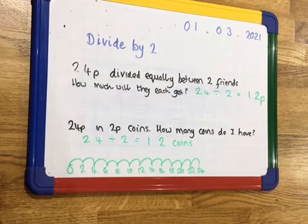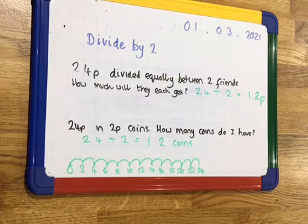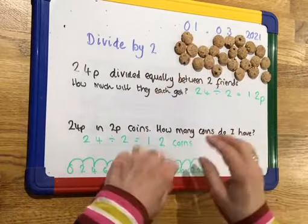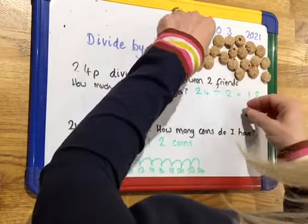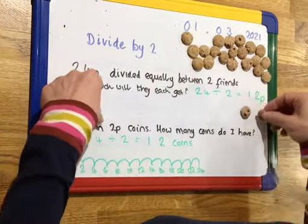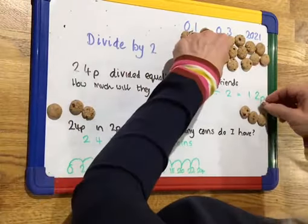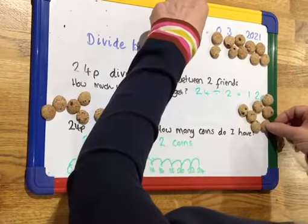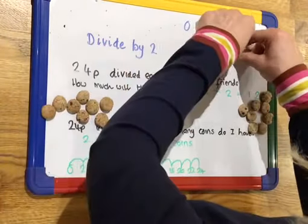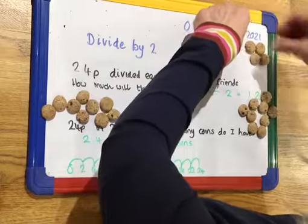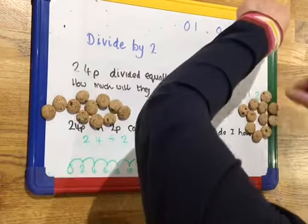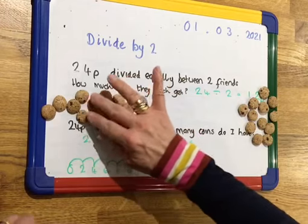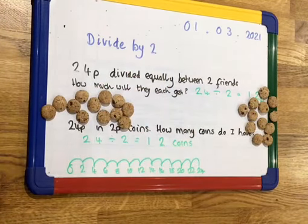Let's divide 24 into two groups and see what happens. Here are my 24 pieces of cereal — I haven't got 24 coins so I'm using cereal. I'm going to share them one for you, one for me, and keep going until I've used them all. Let's count how many I've got in each group: 2, 4, 6, 8, 10, 12 — and 2, 4, 6, 8, 10, 12. We were perfectly right with our calculation.